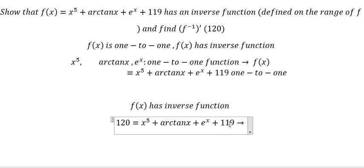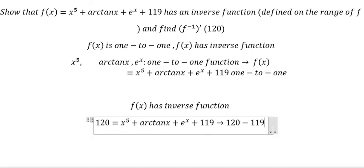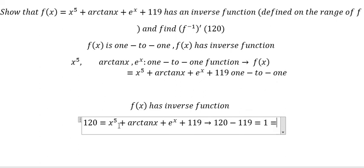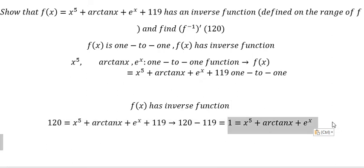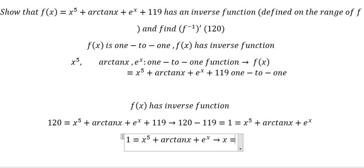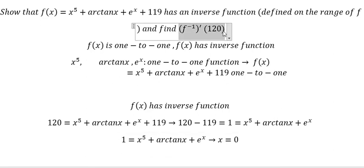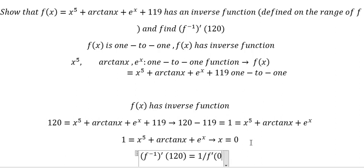I will put 119 to the left, and we have the equation equal to 1. So using a calculator, we get x equal to 0. Now, if we compute the derivative of the inverse function, we have 1 over the derivative of the original function at x equal to 0.